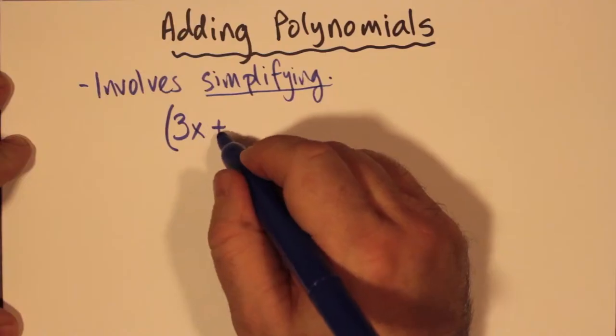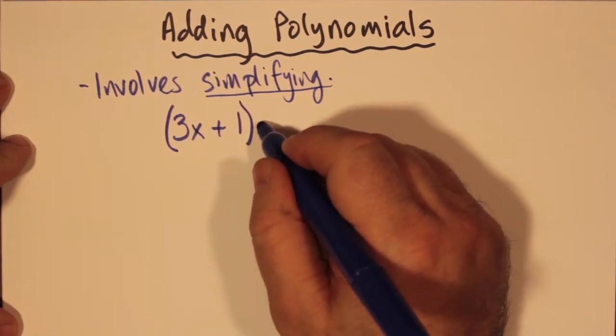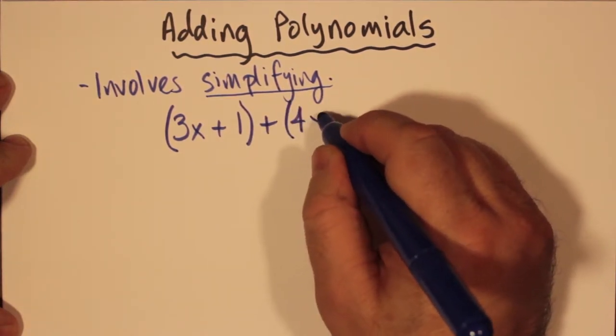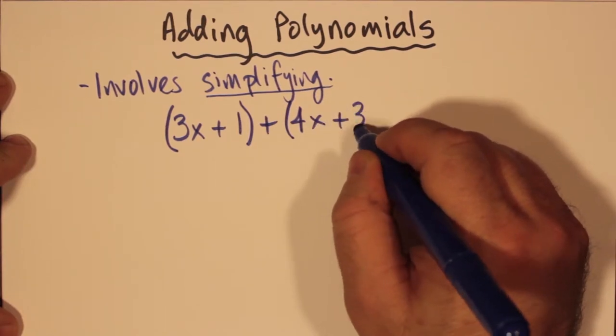Simplifying would be something like 3x plus 1 plus 4x plus 3. So you have 3x plus 1 and 4x plus 3. I put the 3x plus 1 in brackets and 4x plus 3 in another bracket, and these two brackets I add together.